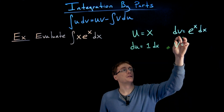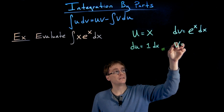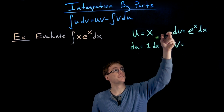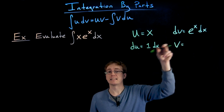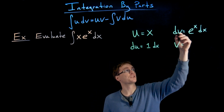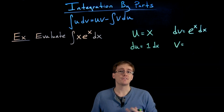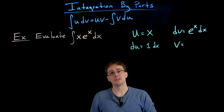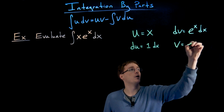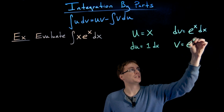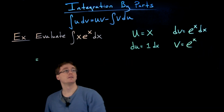Now to go from dv to v, we think of this as finding the anti-derivative. We need to integrate e to the x dx, and that function is equal to its own anti-derivative, so v equals e to the x.